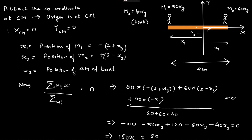We will use the concept that the center of mass stays at the same location regardless of what happens to the individual elements in the horizontal direction. Let us assume a coordinate system attached to the center of mass of the system itself. Many students ask: how do I know the center of mass will be on the right side of the center of the boat? This is because one mass is 50 kg and the other is 60 kg.